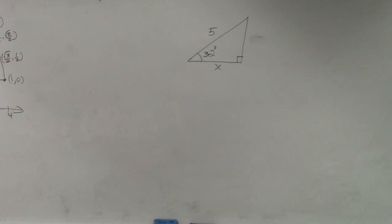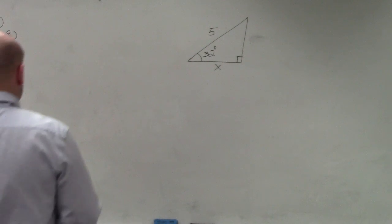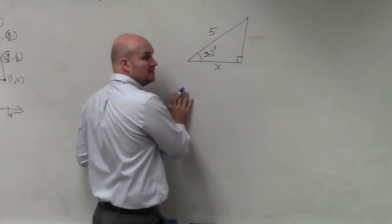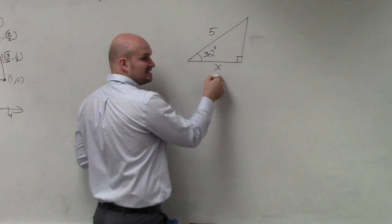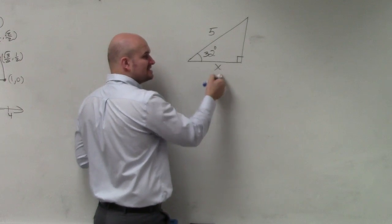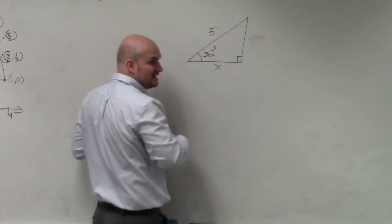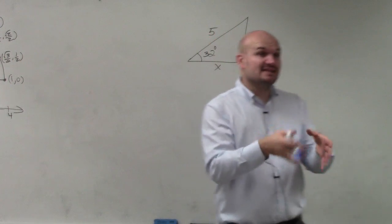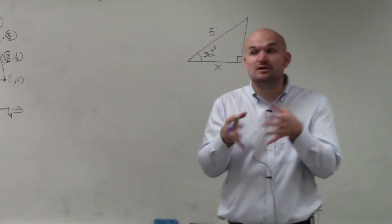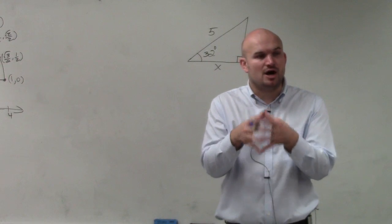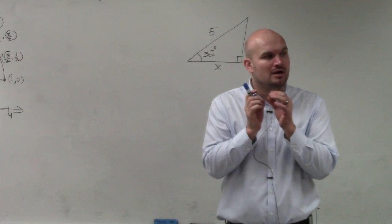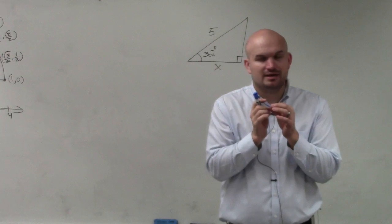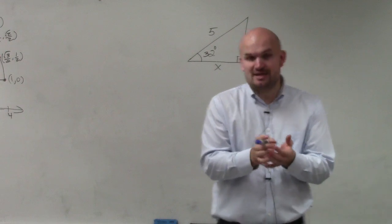In this example, we're given the hypotenuse, but we're not given this length. How does this length compare to that length? We can see that that length is in between our angle and the 90 degree angle, so we're going to call that our adjacent side.